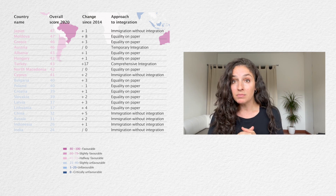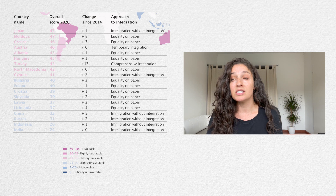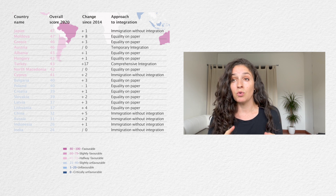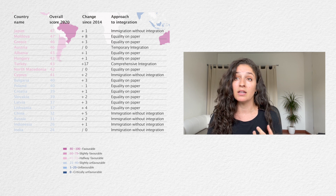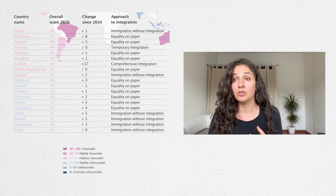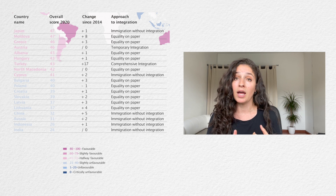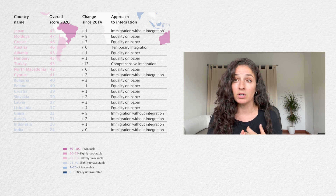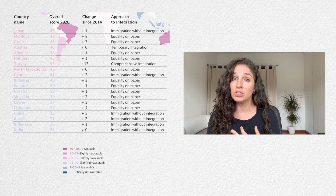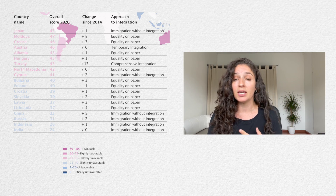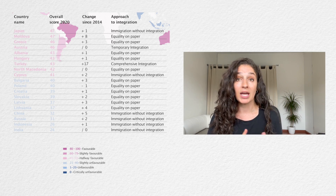Among the bottom 10 are seven ex-Soviet states: Bulgaria, Poland, Croatia, Slovakia, Latvia, Lithuania, and the Russian Federation, as well as three Asian countries: China, Indonesia, and India.